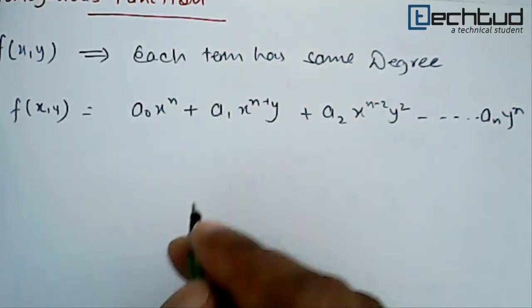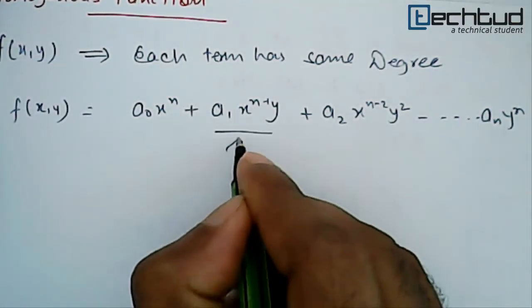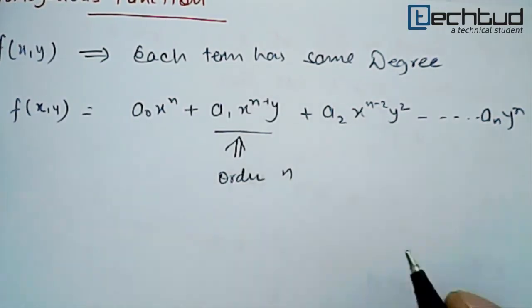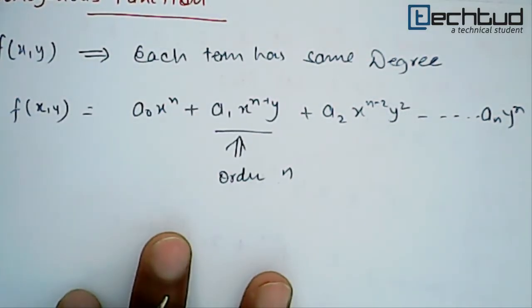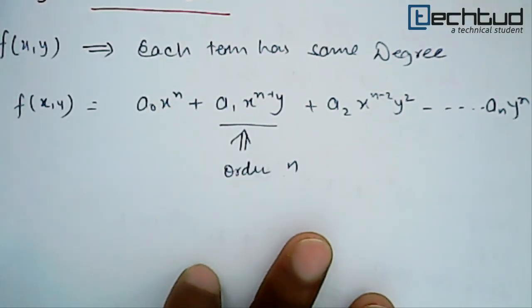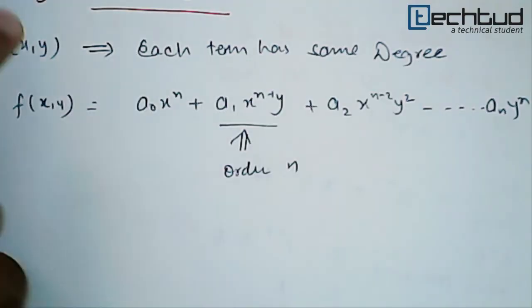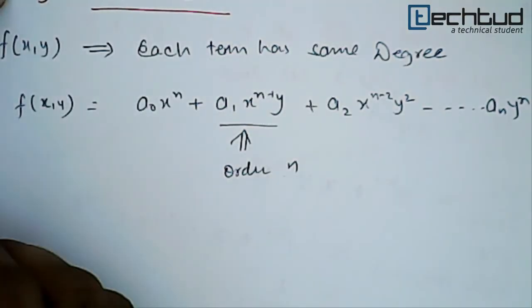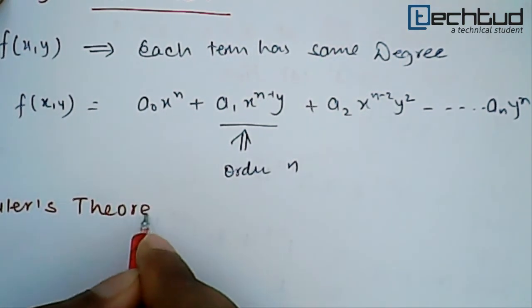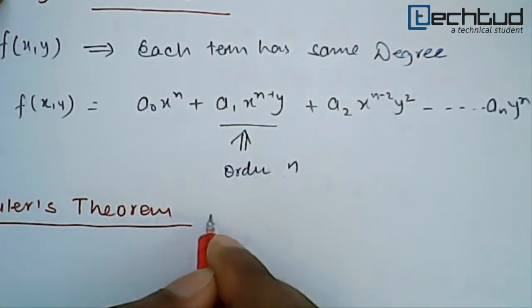So this is basically a homogeneous function. What is the order? Order is n. So this is a homogeneous function. Now what we have to study in this topic is an important theorem which is called Euler's theorem.